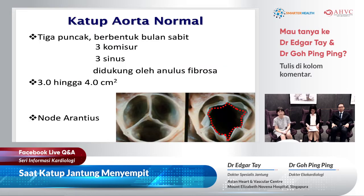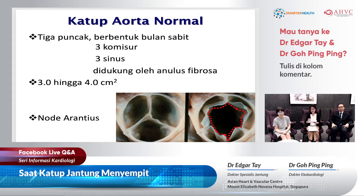Here we can see a close-up of what the Aortic valve looks like. The valve has three parts, called three leaflets. When the valve is open, there is a large opening of approximately three to four centimeters square to allow good flow of blood out of the heart. The normal Aortic valve has three leaflets, and when all three are open, the area is three to four centimeters squared.